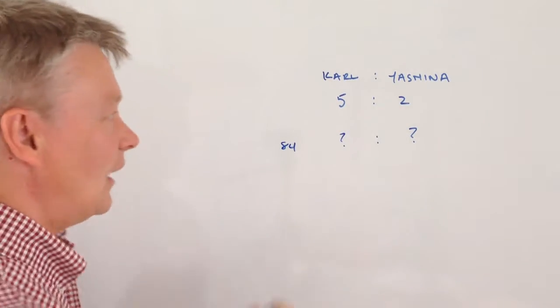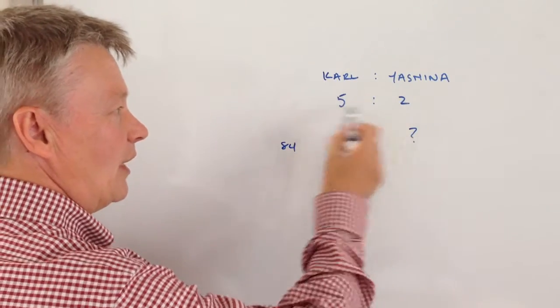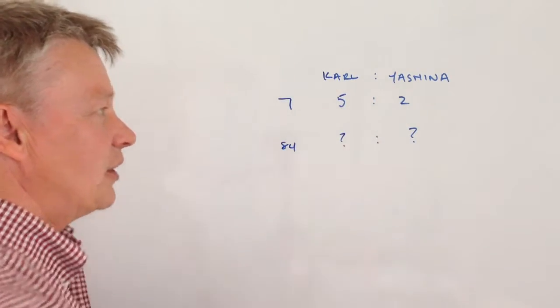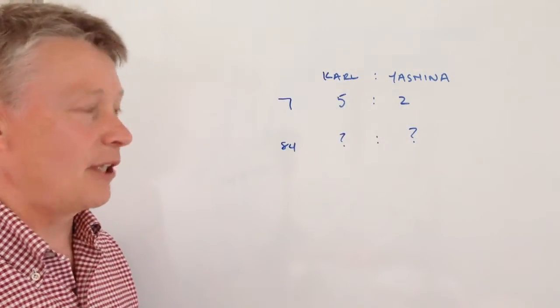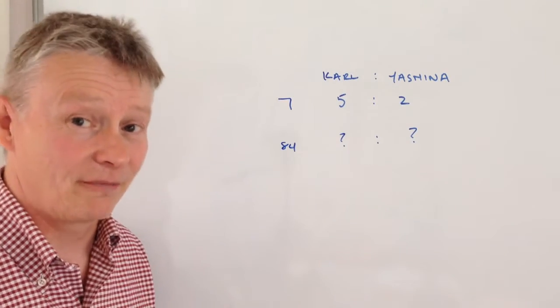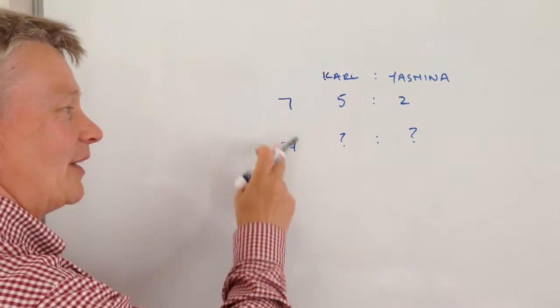Well if they were a combined age of seven then Carl would be five and Yasmina would be two but they're not a combined age of seven, a combined age of 84.